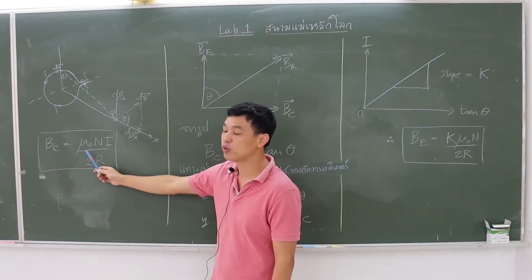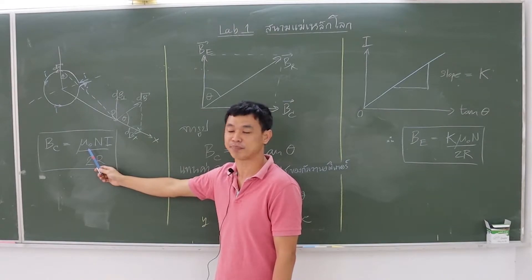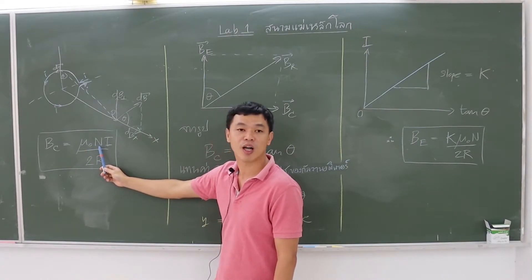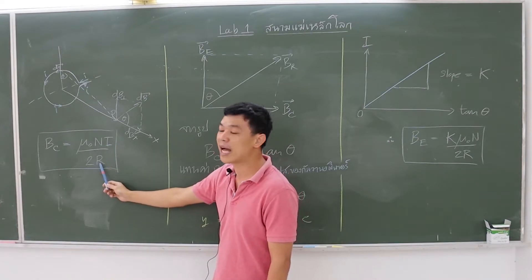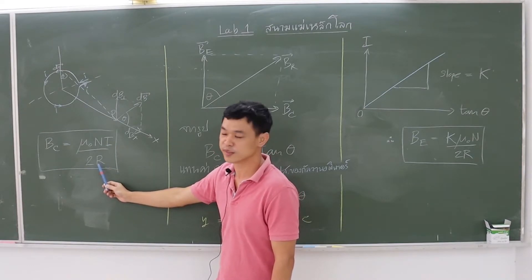Mu zero is the magnetic permeability of free space. N is the number of turns of the coil, I is the current flowing in the coil, and R is the radius of the coil.